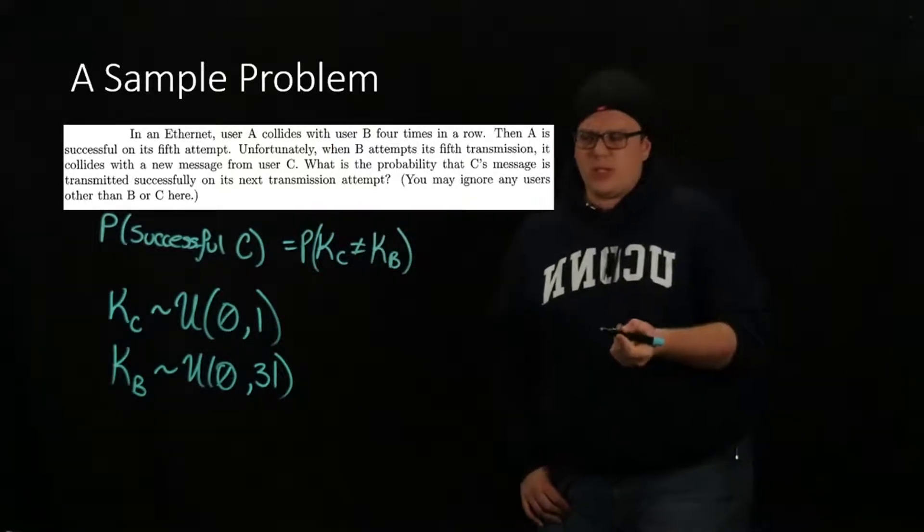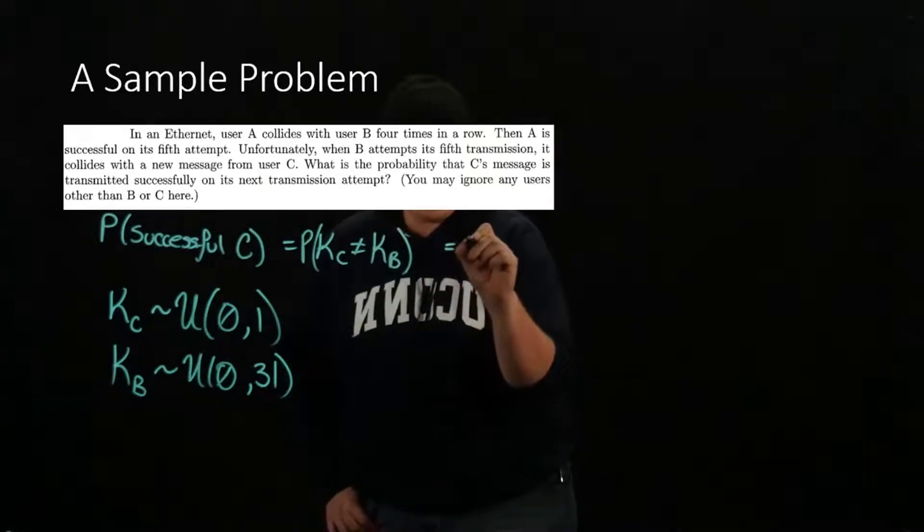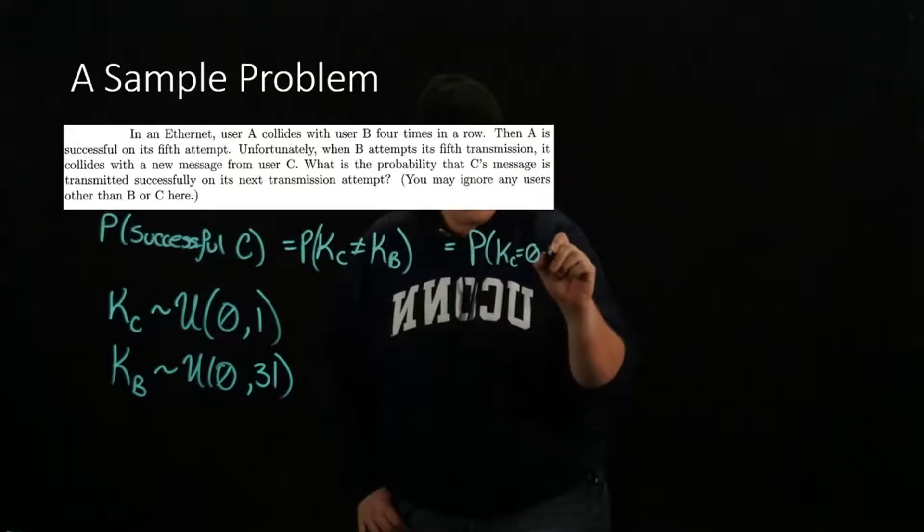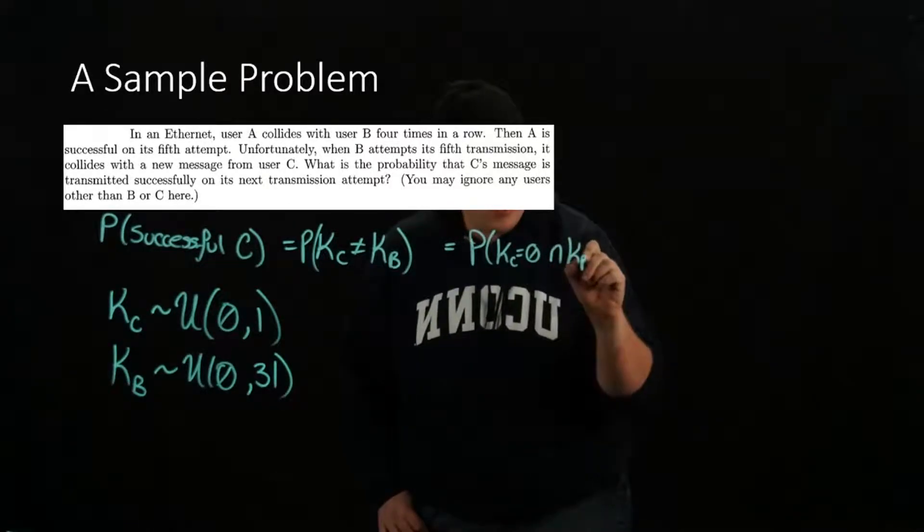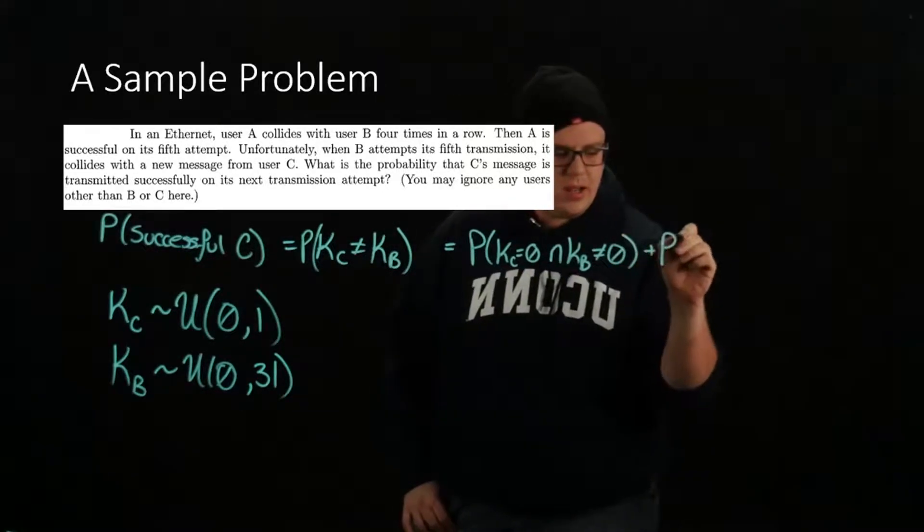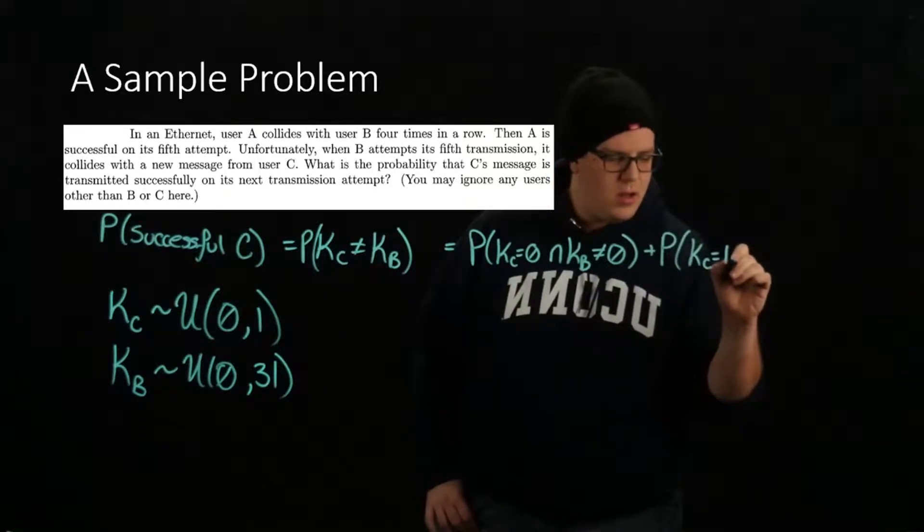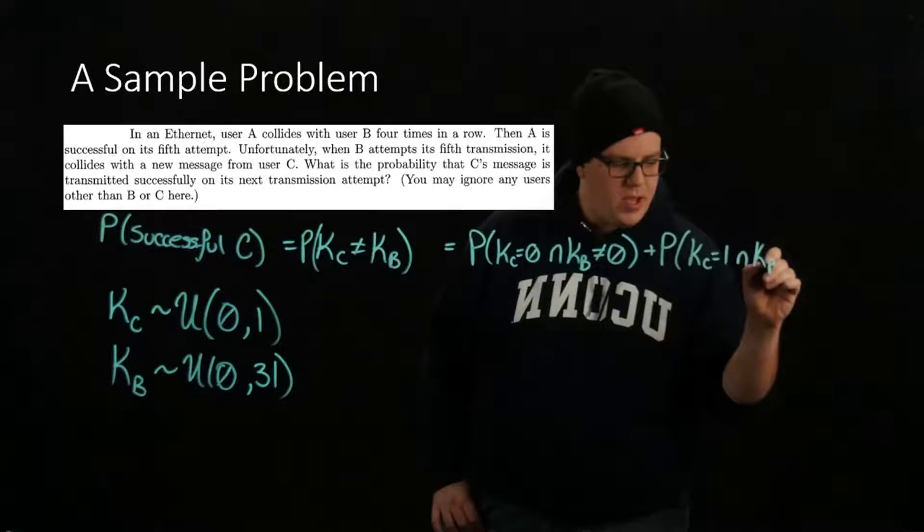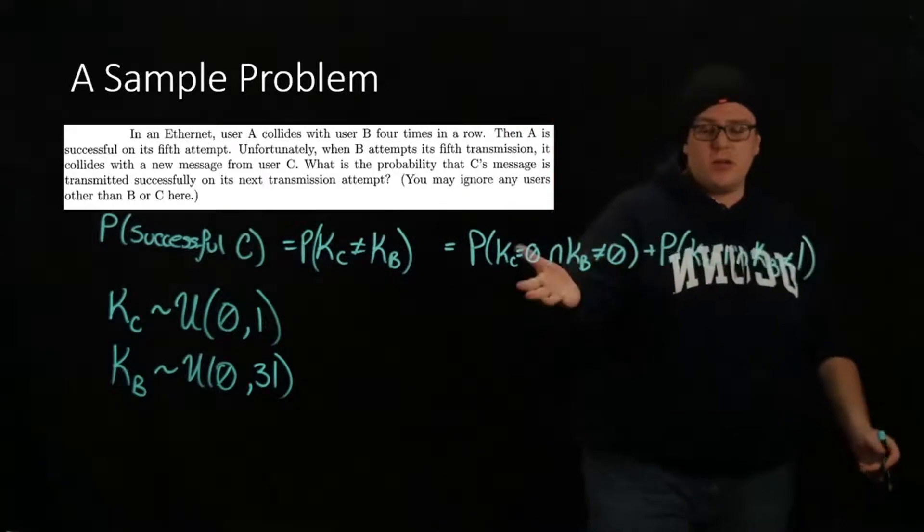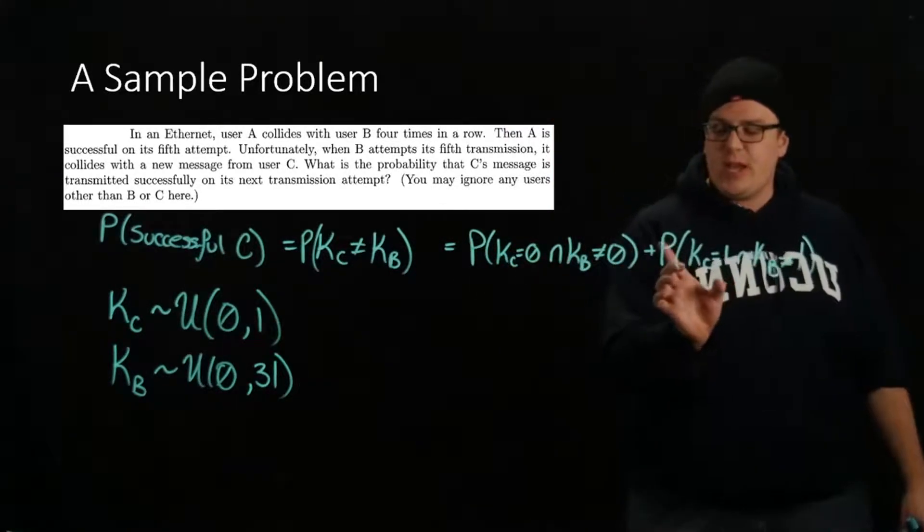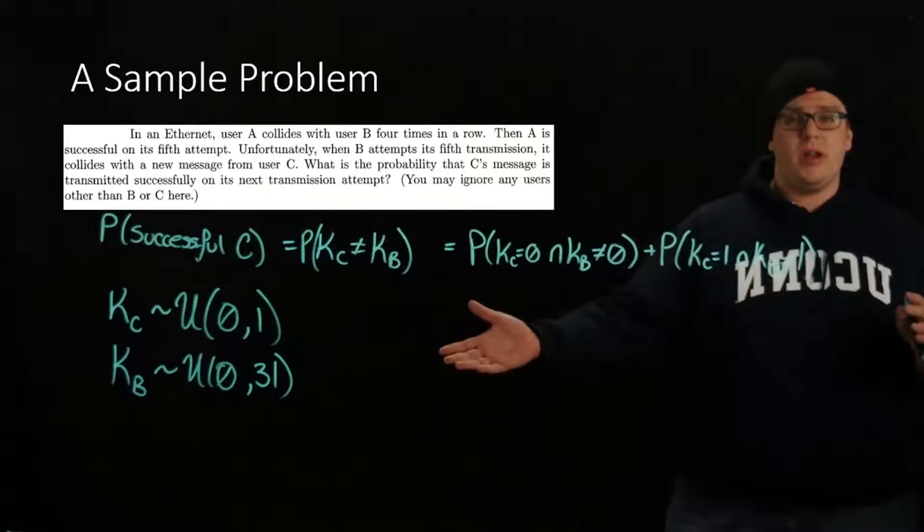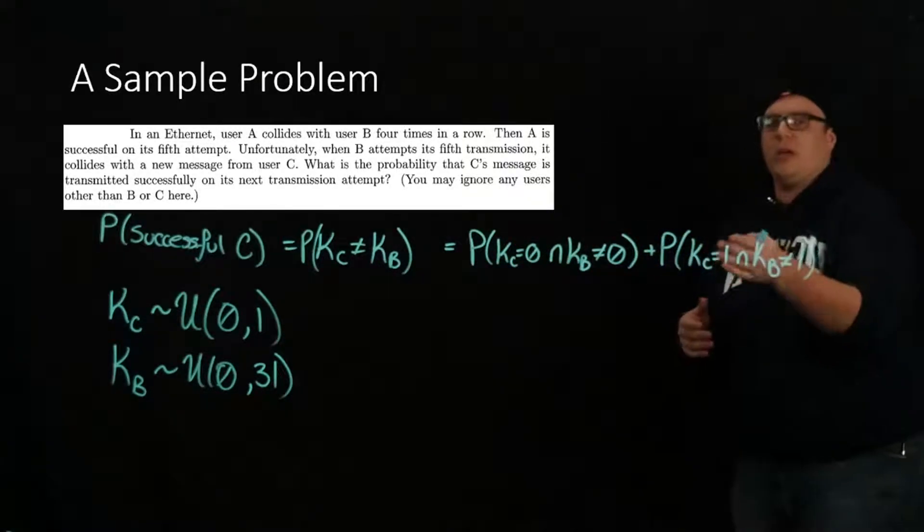The probability of a successful C transmission is the probability that KC does not equal KB. There are only two possibilities for KC, so we can write this as the probability that KC equals 0 intersected with the probability that KB does not equal 0, plus the probability that KC equals 1 intersected with the probability that KB does not equal 1. Since there are only two possibilities for KC and these events are mutually exclusive and exhaustive, this probability works.